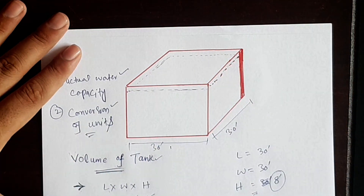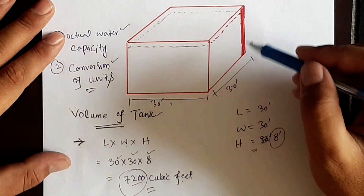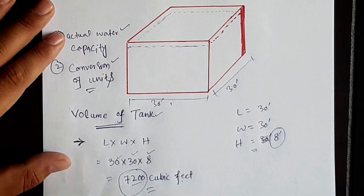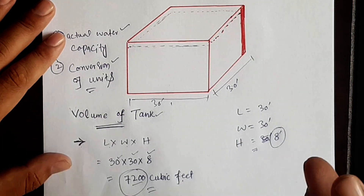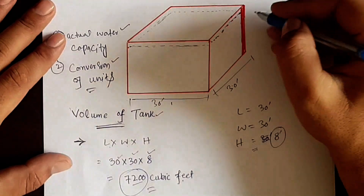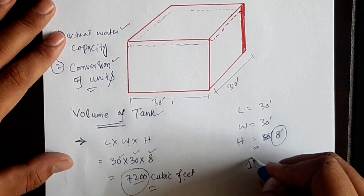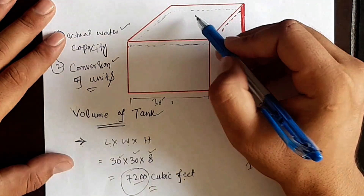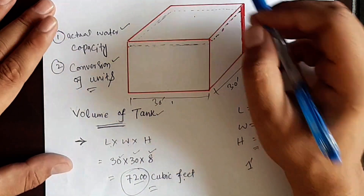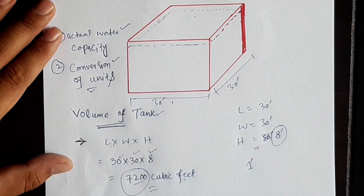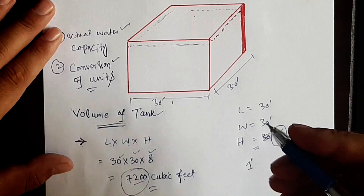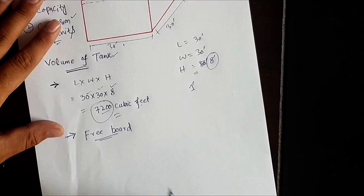If the height of this water tank is 8 feet, we are not going to fill it to 8 feet. We will have to leave some space — here I am considering 1 foot from the top surface, or from the top slab of the water tank. We will have to leave 1 foot as free space.